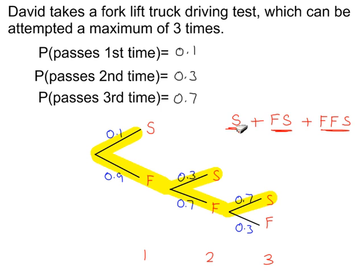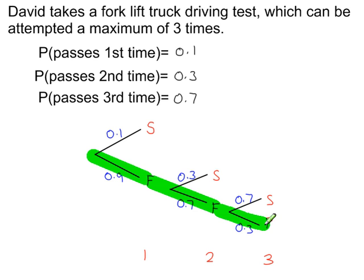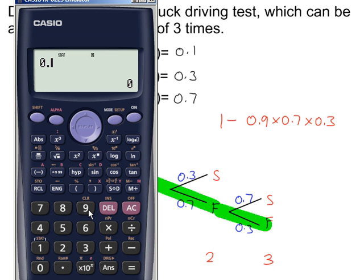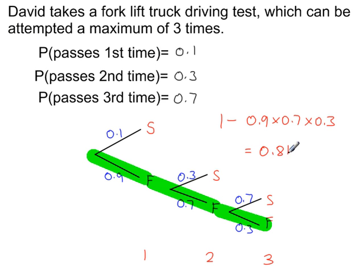An easier way would be to work out the probability that he fails every time — the probability of failure, failure, failure. Then 1 minus the probability of 3 failures gives you the probability that he passes. So that's 1 minus (0.9 times 0.7 times 0.3). That gives us 1 minus 0.189, which equals 0.811. This is the overall probability that he passes his driving test.